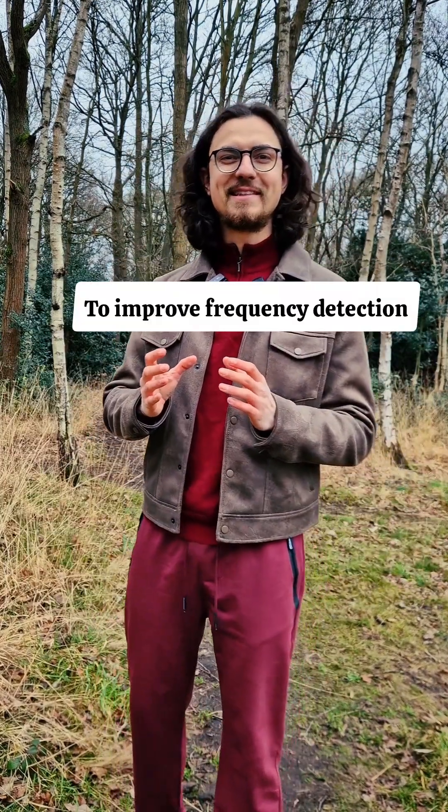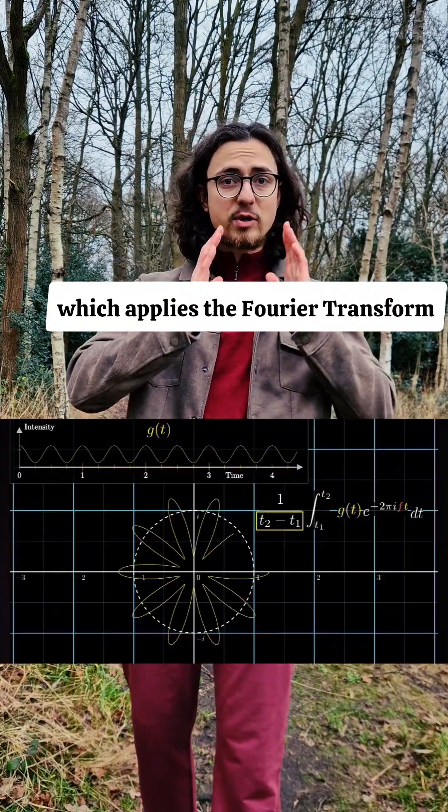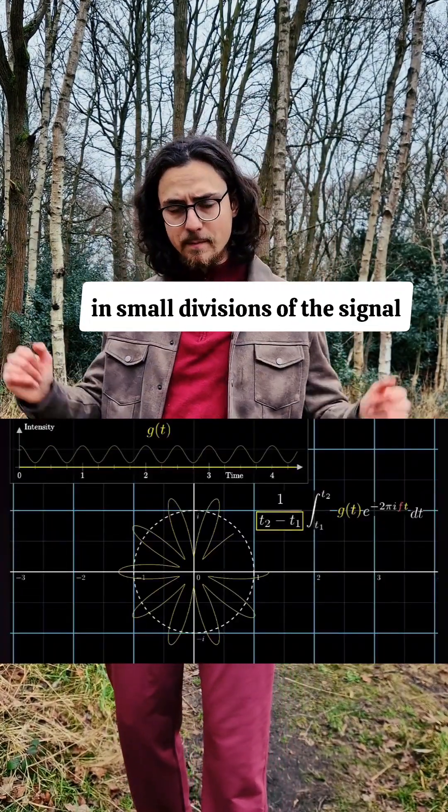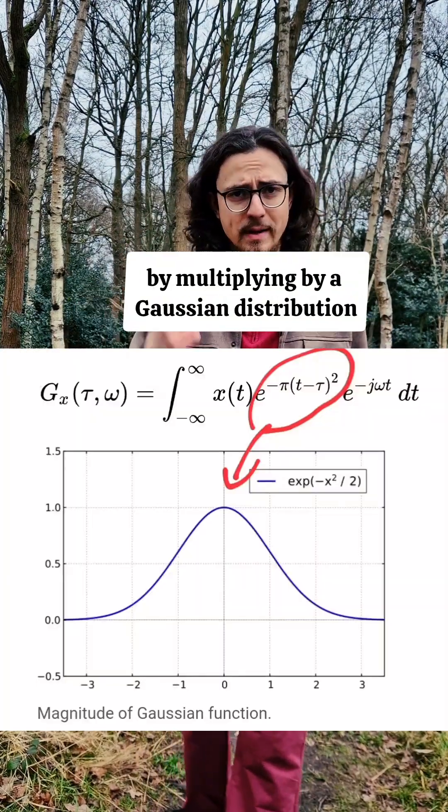To improve frequency detection, mathematicians have developed new tools, such as the short-term Fourier transform, which applies the Fourier transform in small divisions of the signal. The Gabor transformation, which does the same, but normalizes it by multiplying by a Gaussian distribution.